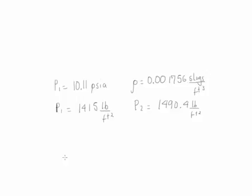The last part of the problem is to calculate the pressure difference indicated by the pitot-static probe. That is simply going to be the value between P2 minus P1 which is basically the difference between these two values and that is equal to 75.4 pounds per feet squared.